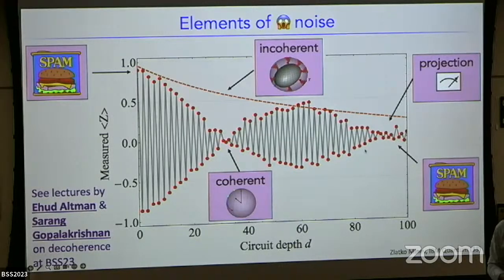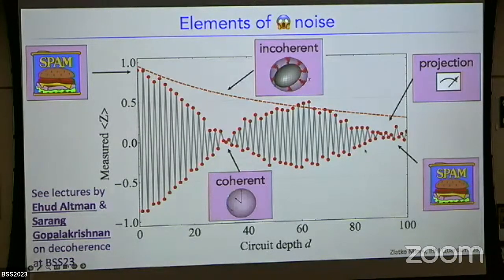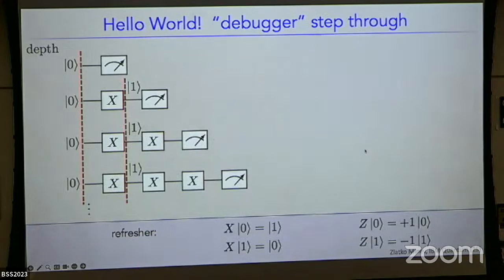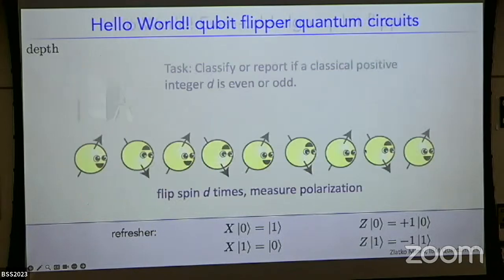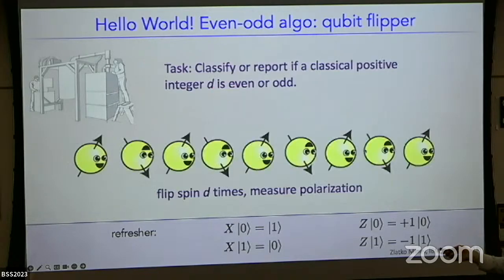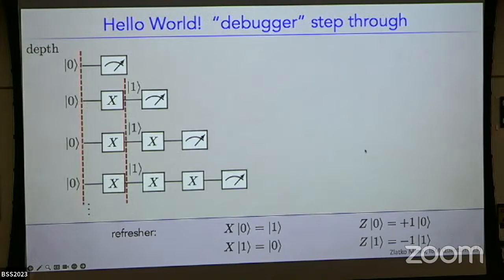This data is from running the experiment many many times, because each time you run the experiment you get a single answer — a one or a zero. It's only by accumulating statistics that you can calculate expectation values. You can ask how many statistics you need. This measurement gives you one or zero, and this particular data has something like a thousand shots.